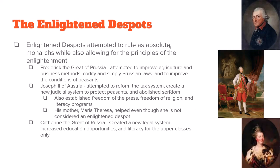Here are three more people you should know — they're called enlightened despots. All three are absolute monarchs who voluntarily allowed in some Enlightenment ideals. The first is Frederick the Great, King of Prussia. He used Enlightenment ideals to improve agriculture and business methods, simplified the Prussian legal system, and tried to improve the conditions of his peasants — he didn't make them completely equal, but he brought them closer.